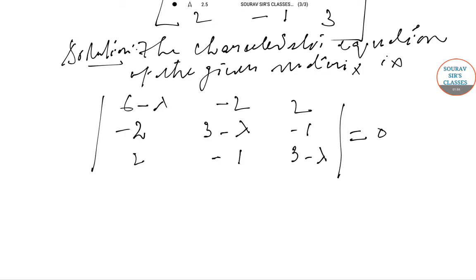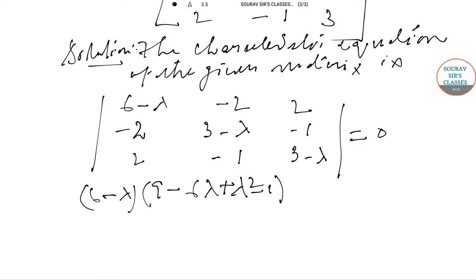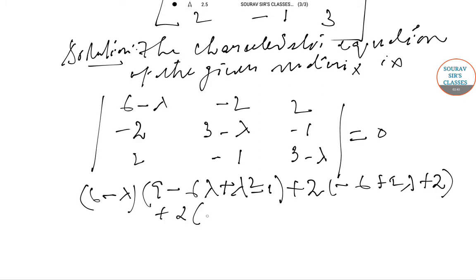Now go ahead and do the multiplication. We have (6 - λ) multiplied by (9 - 6λ + λ²) minus 1, plus 2 into (-6 + 2λ), and then 2 into (2 - 6 + 2λ). Equate the whole expression to 0 to get the value of lambda.